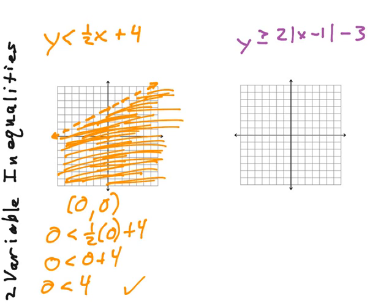Now if we picked a test point and it did not work, then what we are going to do is shade everything that is on the opposite side of our boundary line from there. Also a good rule of thumb, if you have a less than, you are going to be below your boundary line. If you have a greater than for y, it is going to be above the boundary line.